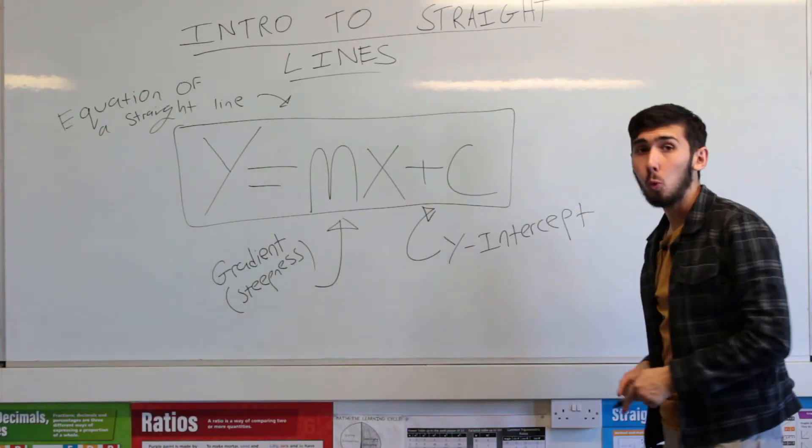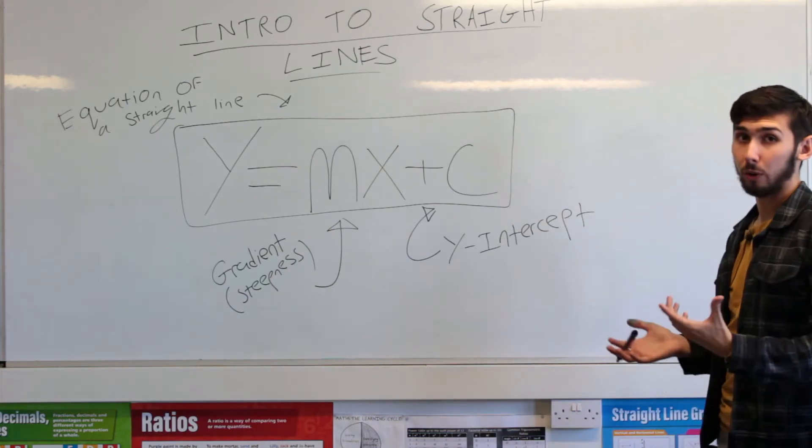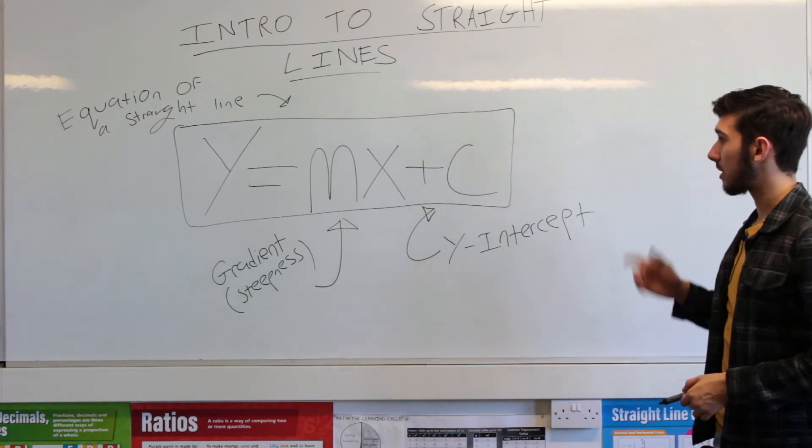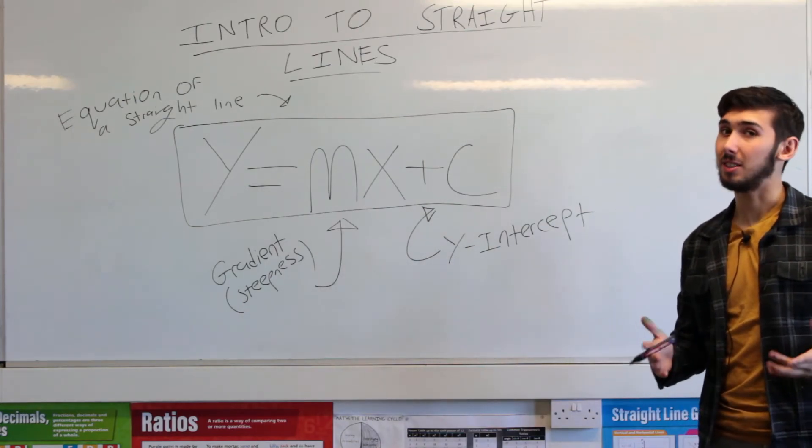The c is always the y-intercept. And again, we will talk about why c is the y-intercept all of the time. But that is just a fact. C is the y-intercept of the line in every case. It's never not.